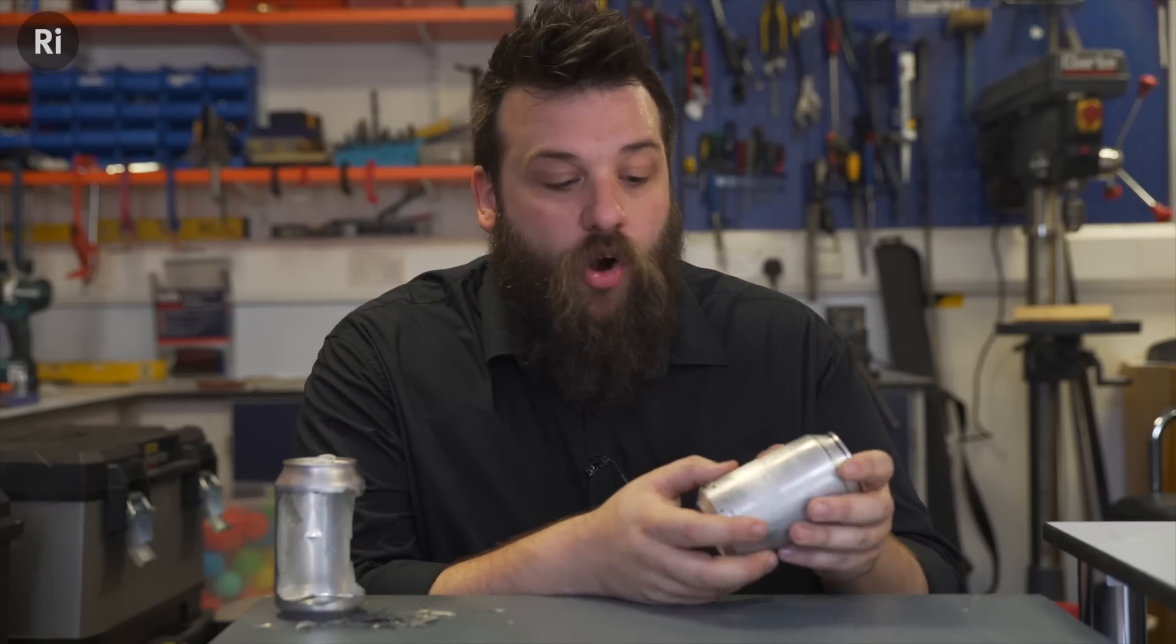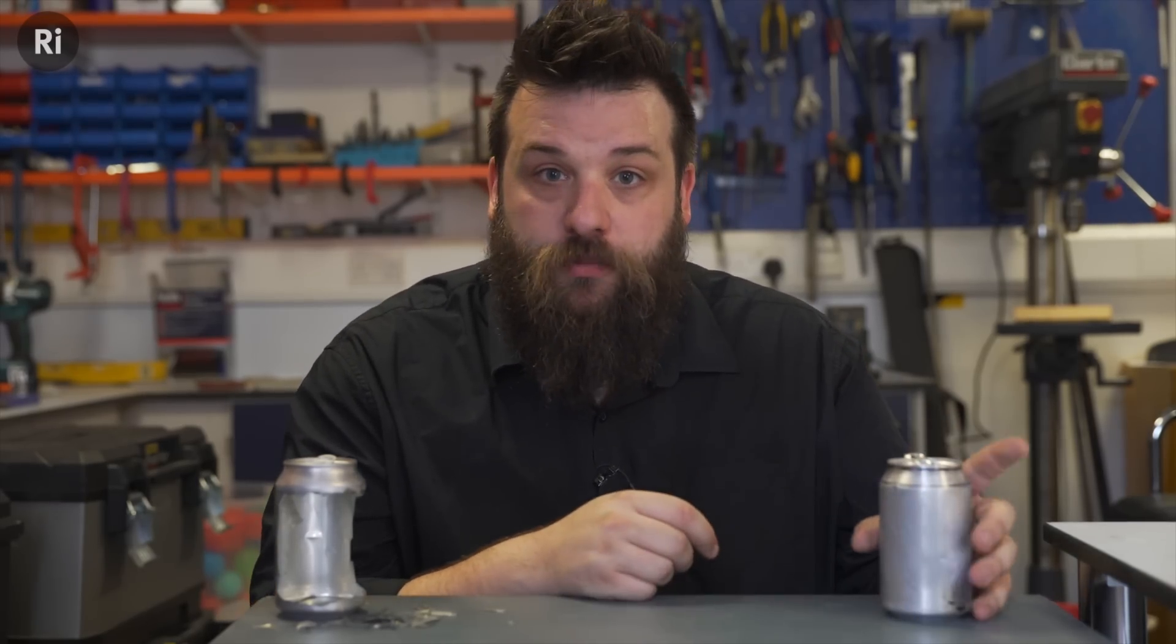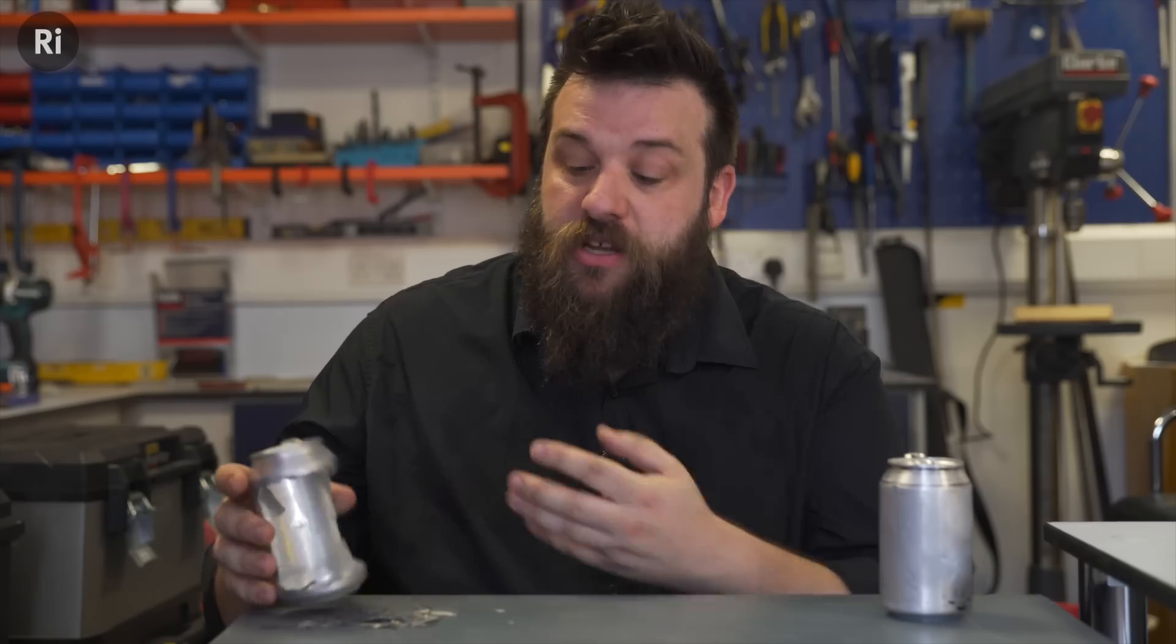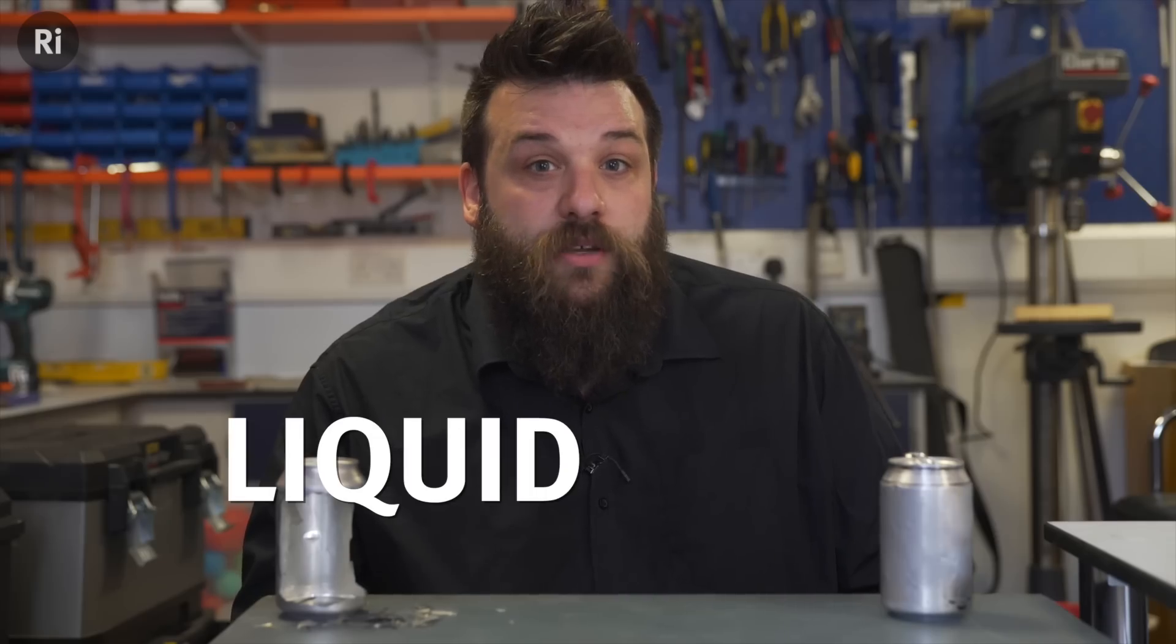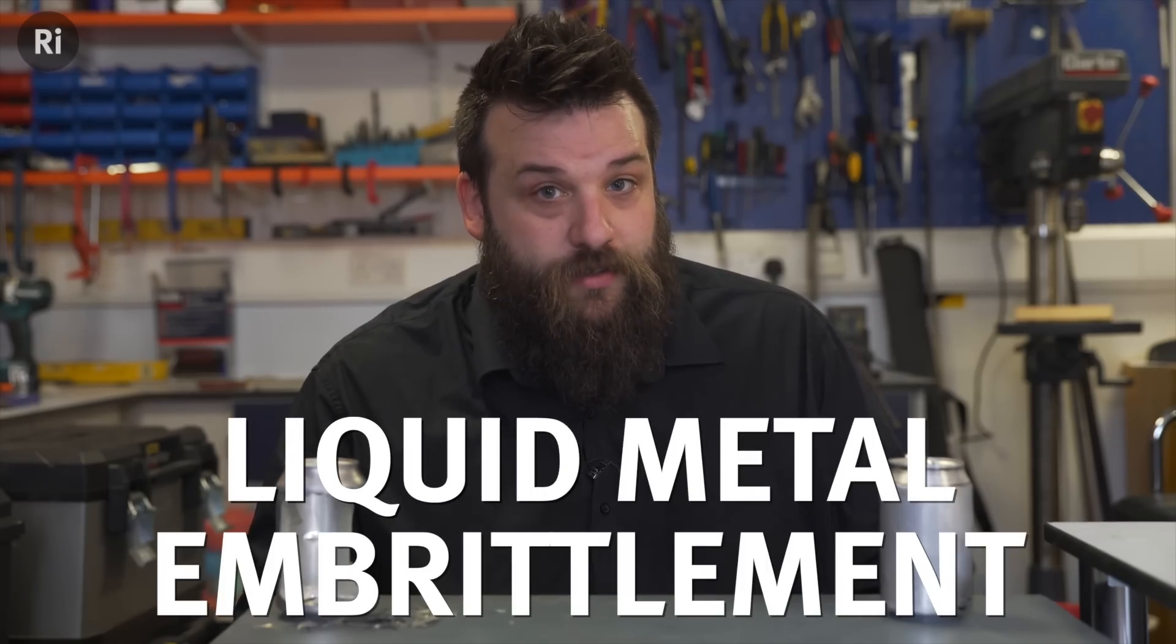So what's going on here to change aluminium from something relatively strong, that can be bent and deformed without breaking, to something much weaker and brittle even? Well, contrary to what you might think, it's not a chemical reaction. The liquid gallium is actually physically penetrating through the aluminium. It's a process called liquid metal embrittlement. This is how it works.